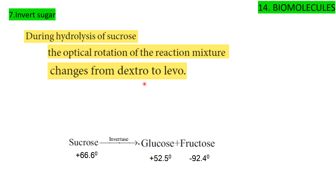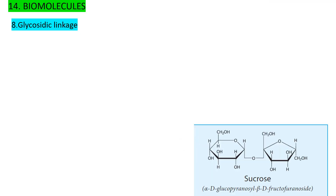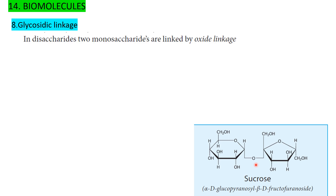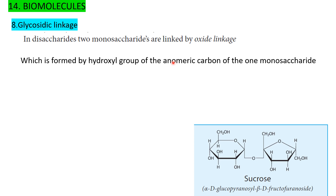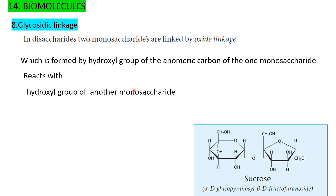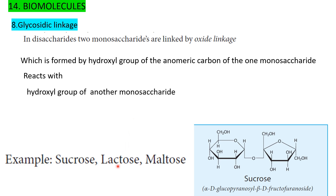Sucrose is dextrorotatory; its hydrolysis gives an equimolar mixture called Invert Sugar. So sucrose is called Invert Sugar. Glycosidic linkage: in a disaccharide, two monosaccharides are linked by an oxide linkage formed when the hydroxyl group of the anomeric carbon of one monosaccharide reacts with the hydroxyl group of another monosaccharide. This is called glycosidic linkage. Examples: sucrose, lactose, maltose.